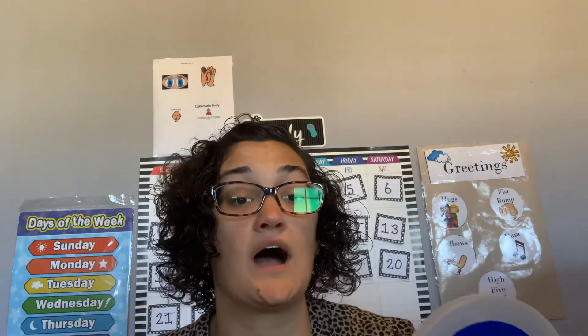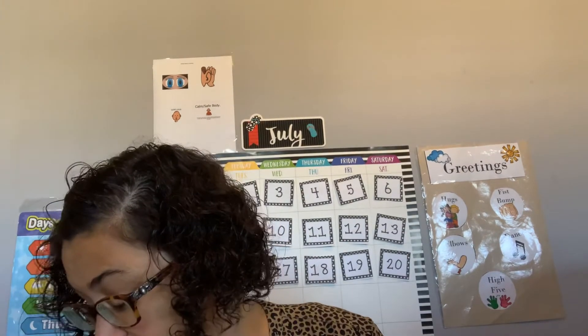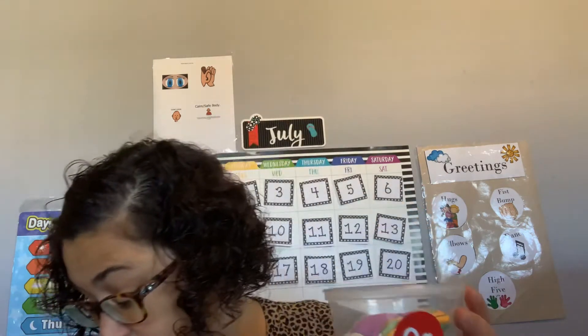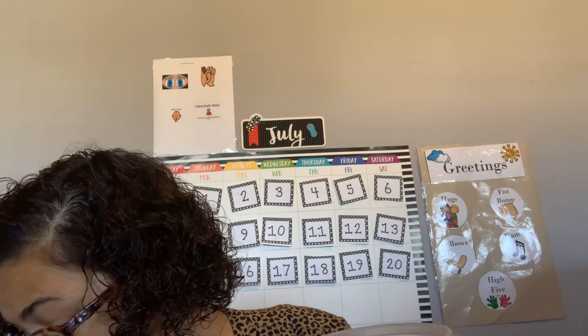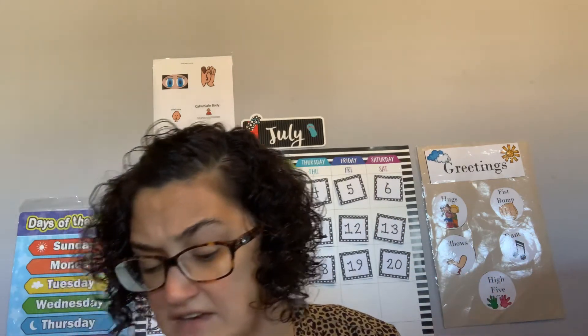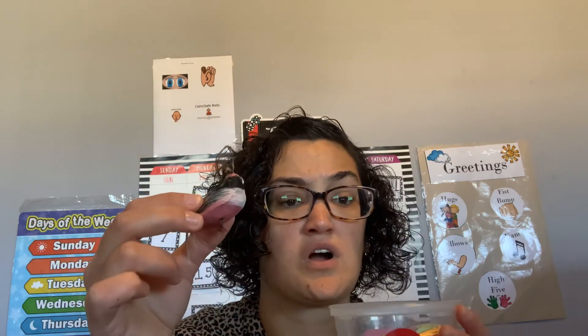What letter is this? Q! And Q makes the Qu sound. So let's get started. What is this called? Queen! Queen goes in the Qu bucket because it starts with Q. And then I have a little Q and a big Q — goes in the Q bucket. And then I have this bird that starts with a Q, called a quail. Quail goes in the Q bucket.